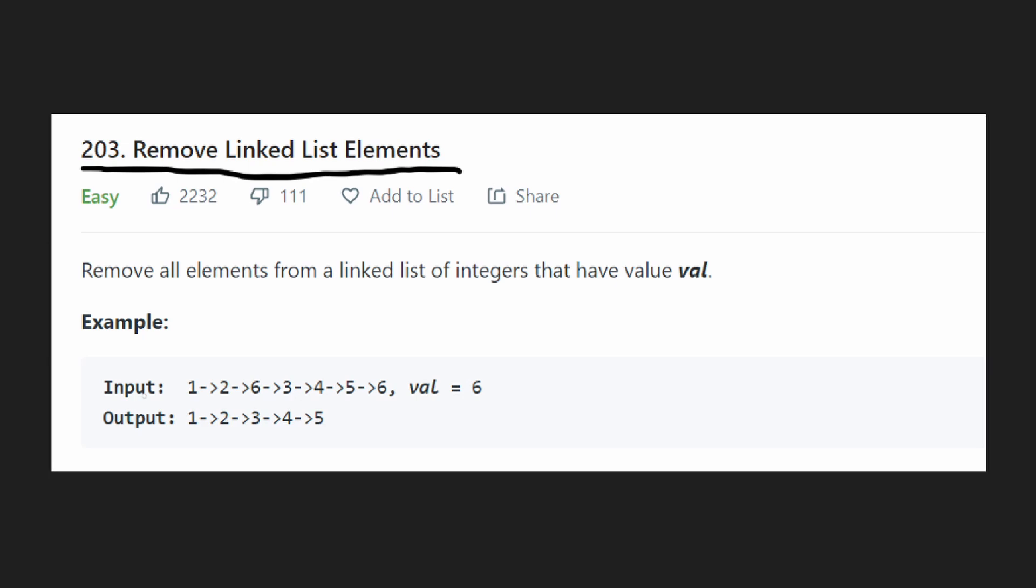So let's say we have a linked list, 1, 2, 6, 3, 4, 5, 6, and we want to remove all occurrences of the value 6 from this list.